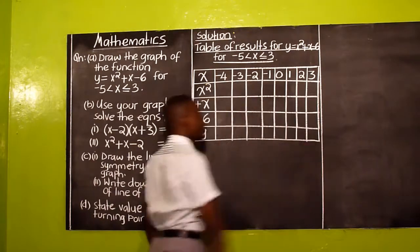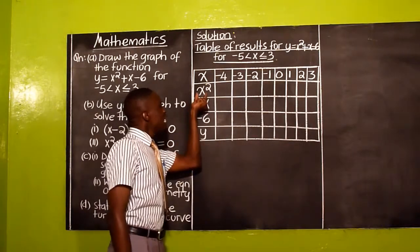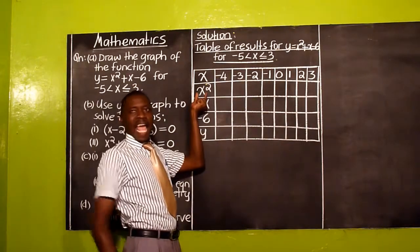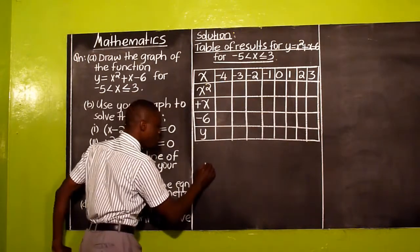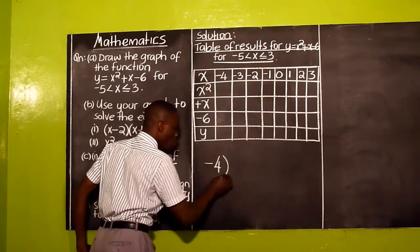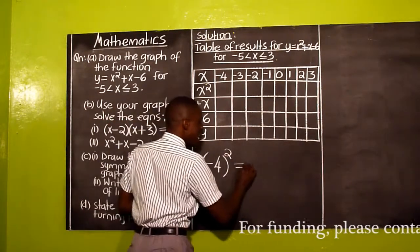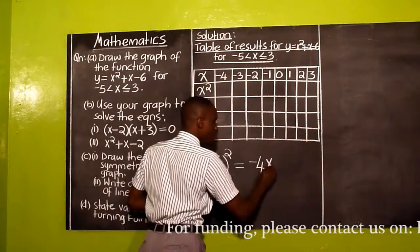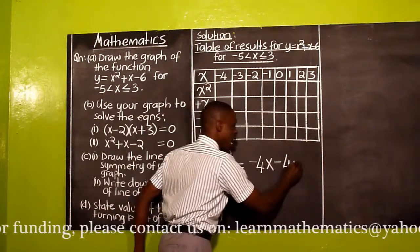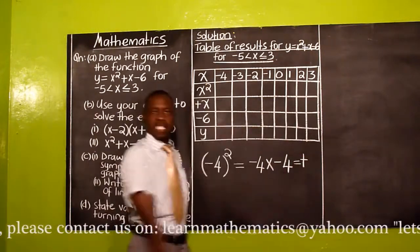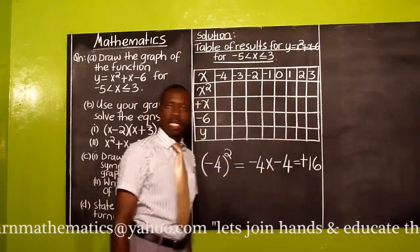Now what is remaining is mere substitution. In substituting, they are telling us X squared. Our first value of X is -4, so we are going to have -4 squared, which is the same thing as saying -4 times -4. A negative and a negative multiplied will give you a positive. 4 times 4 will give you 16. So implying that -4 squared will give us 16.